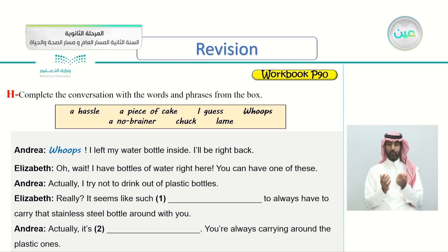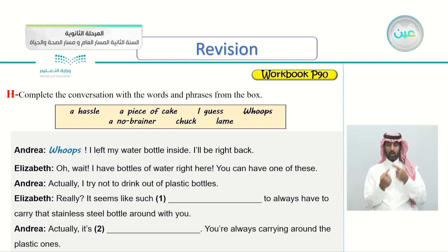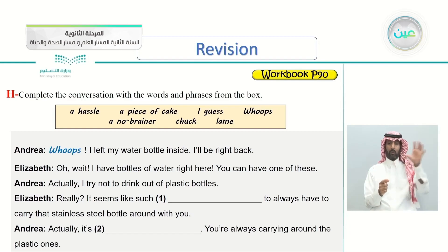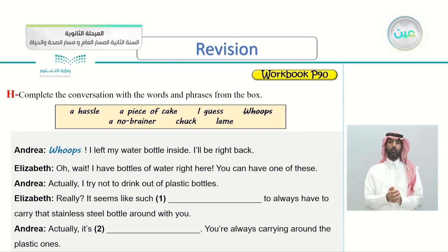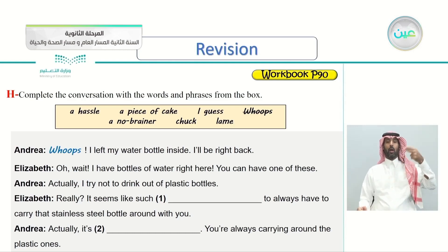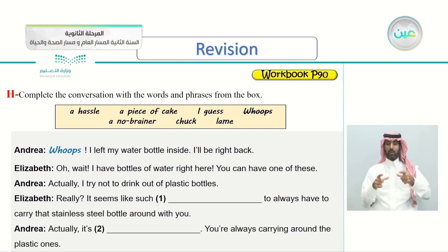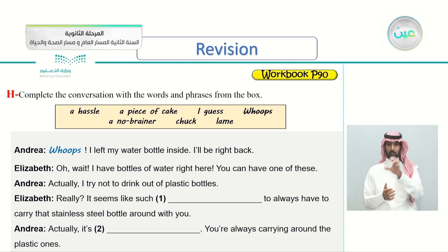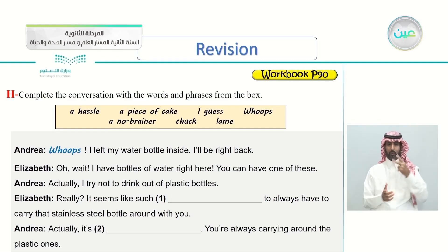Exercise H: complete the conversation with the words and phrases from the box. As you can see, we have a box with some words we'll be filling the gaps with. The first word is 'a hassle,' then 'piece of cake,' 'I guess,' 'no-brainer,' 'chuck,' and 'lame.' The first one — 'whoops' — is already done for you.